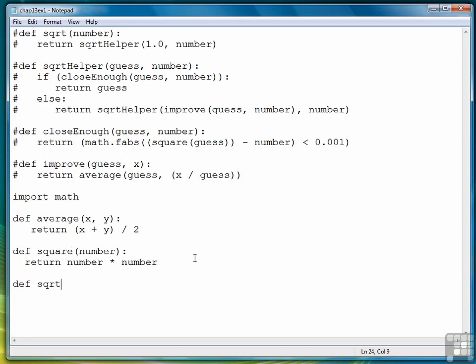Our main function is square root, and its parameter is a number. Then, the first nested function we're going to define is close enough, and its only parameter will be guess. The reason for that is that number is now available to the close enough function, because close enough is defined inside of square root.